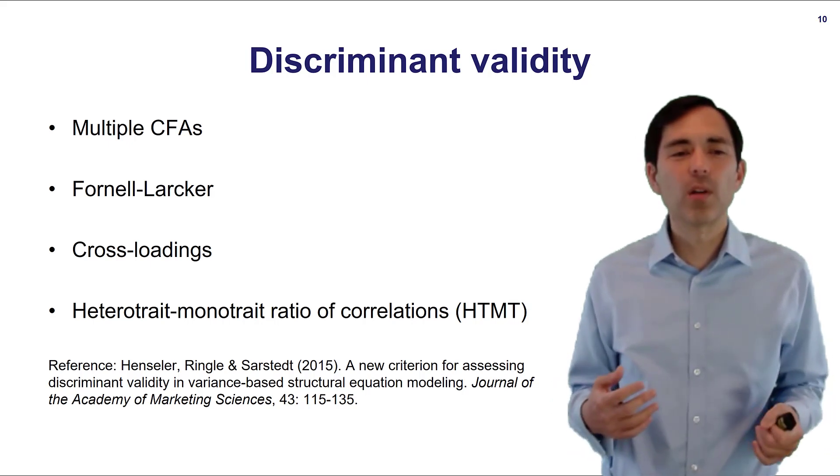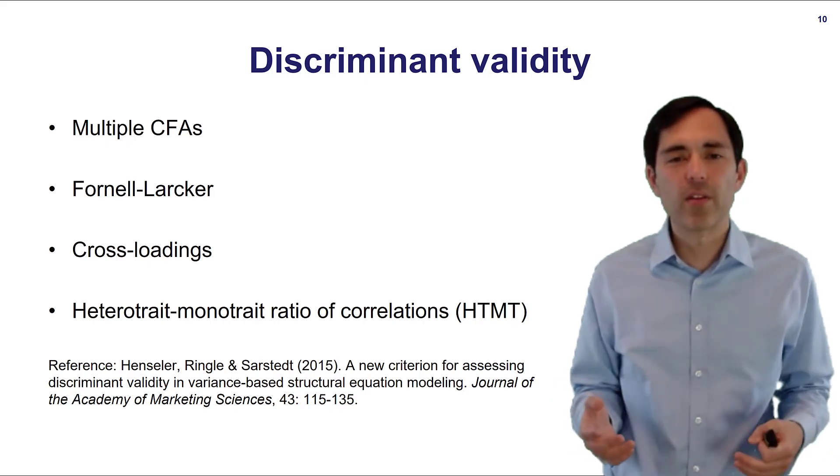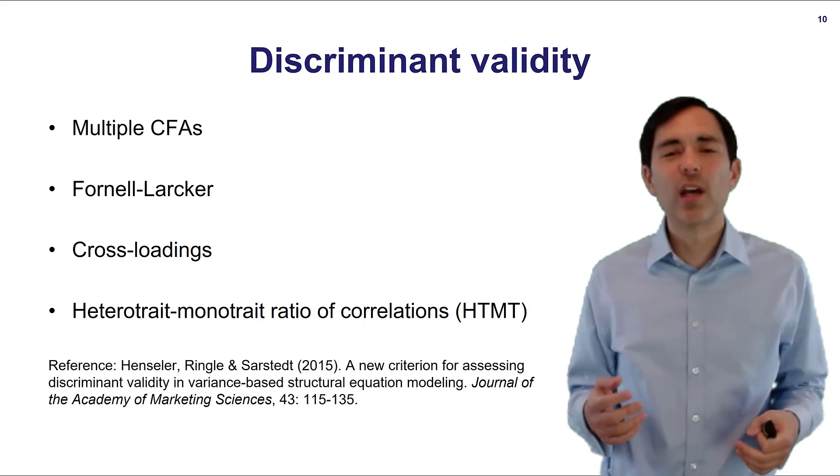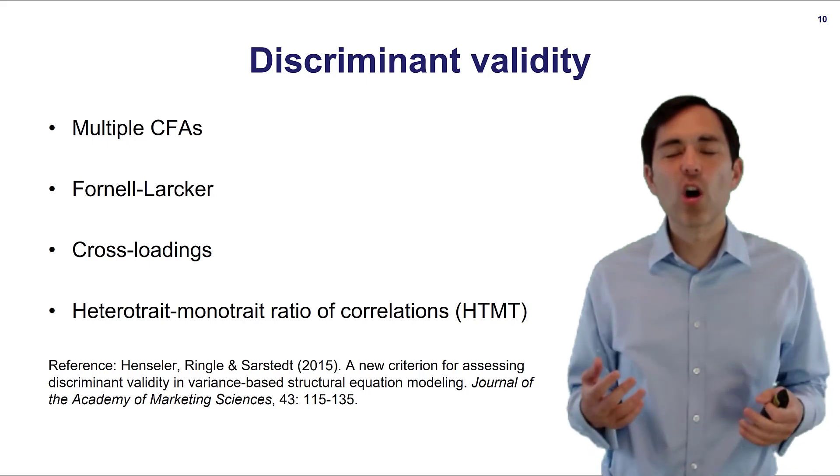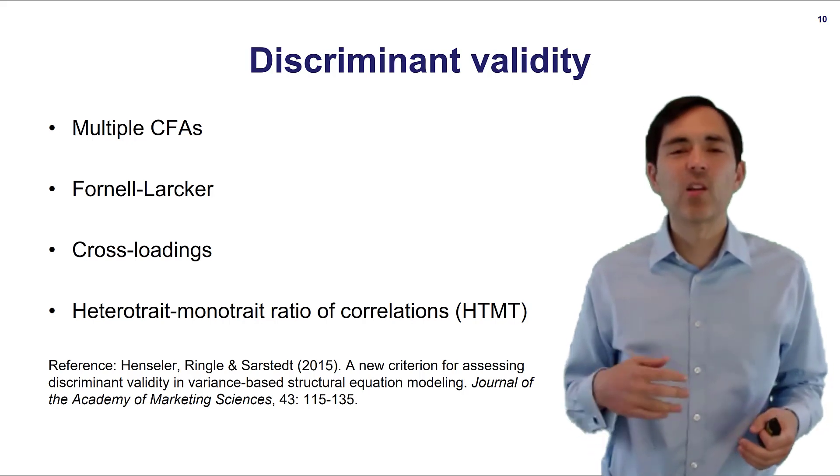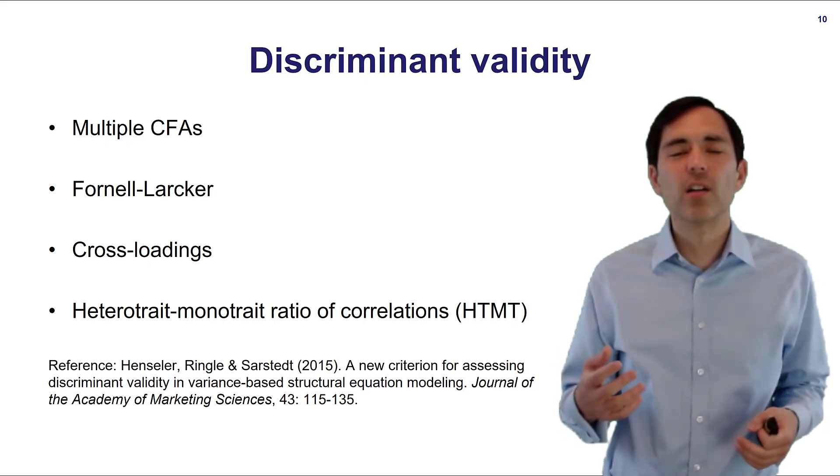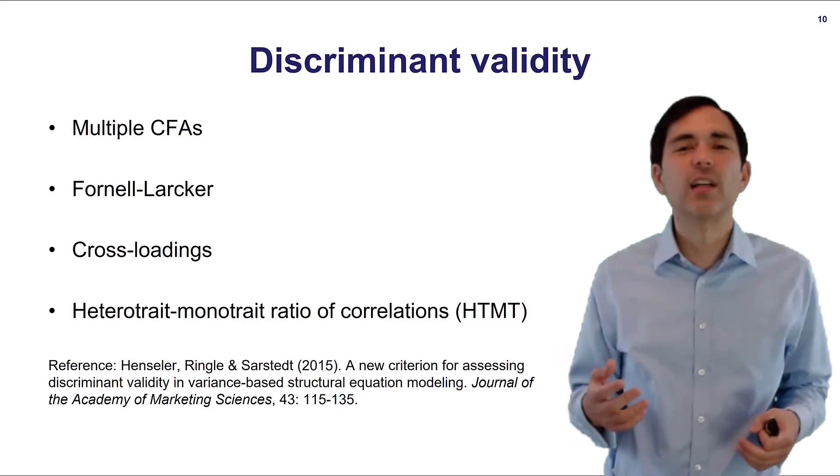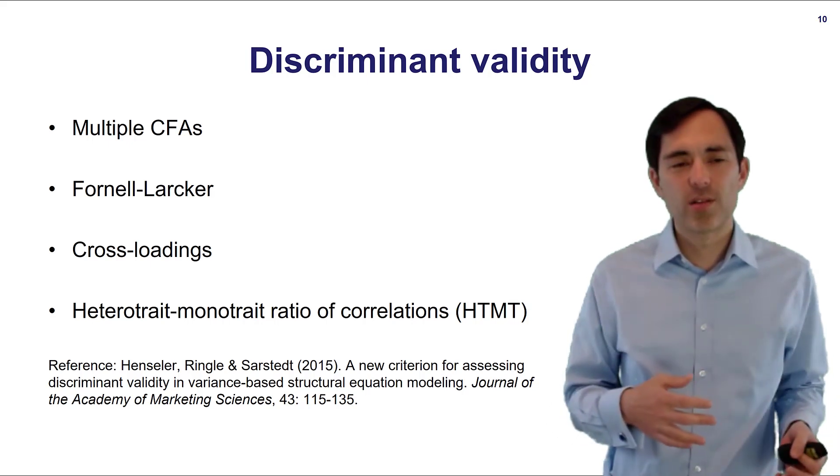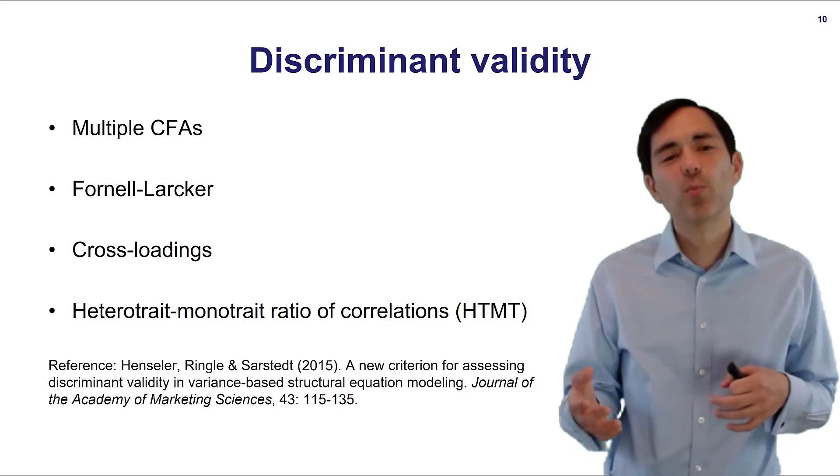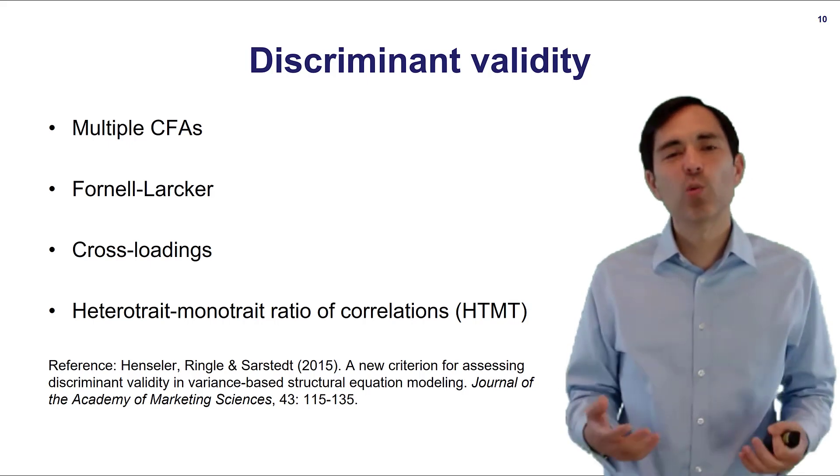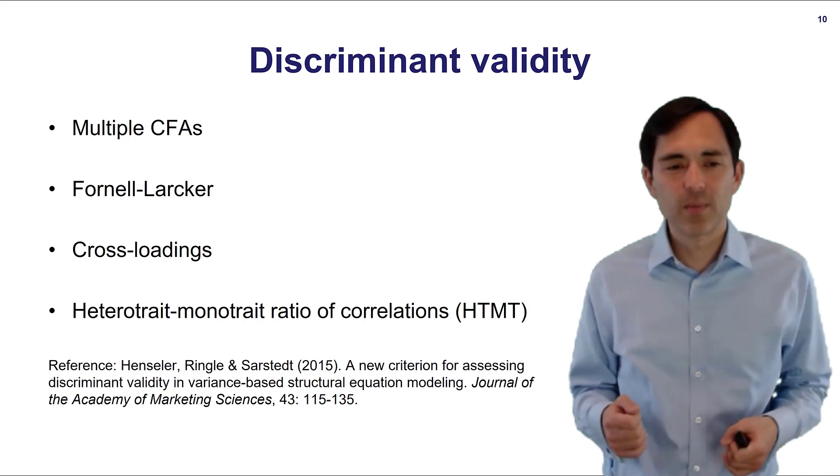Another method that has been very popular is the Fornell and Larcker method. You would look into average variance extracted and composite reliabilities and then you would compare the square root of average variance extracted with the other correlations and they should be lower and then you would also conclude that you have discriminant validity.